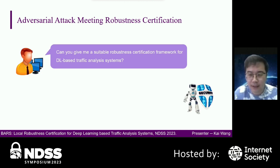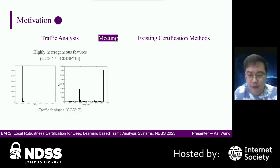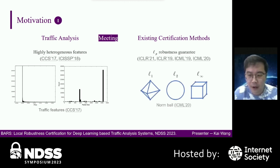How can we design a suitable robustness certification framework for deep learning-based traffic analysis systems? Unfortunately, existing robustness certification frameworks are not suitable for traffic analysis. We need to design a special one under three motivations. Firstly, the traffic features are highly heterogeneous. For example, as shown in the left figure, the data distributions of inter-packet delays and packet sizes are significantly different. However, existing certification methods mainly focus on LP-robustness guarantee, providing the same robustness region size for all dimensions. Therefore, we need dimension heterogeneous certification.